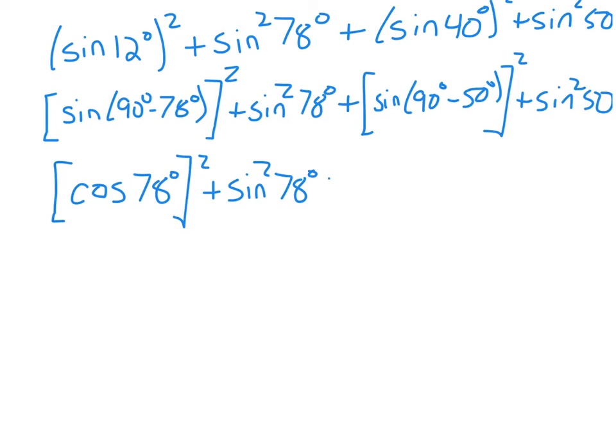And then the sine of 90 degrees minus 50 degrees is just the cosine of 50 degrees still squared.